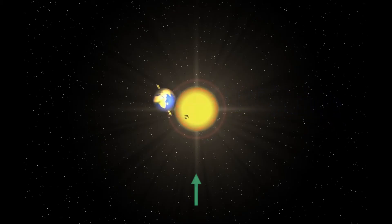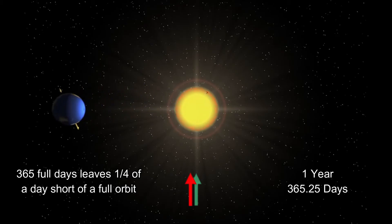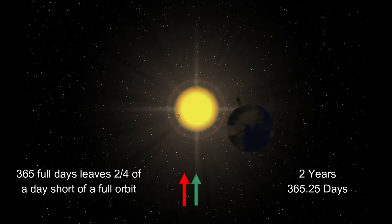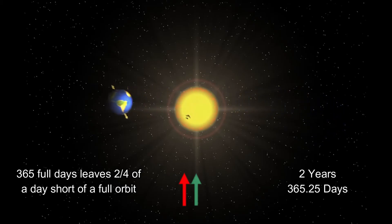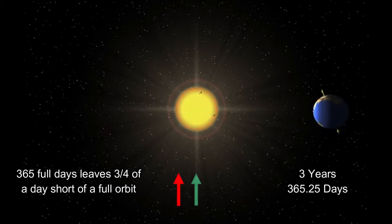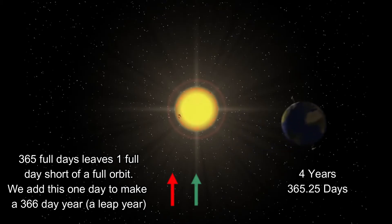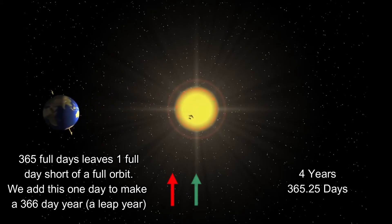After one complete orbit, the Earth has done a year — that's 365.25 days. However, if we only look at full days, it's a quarter of a day short. After two orbits, it's two quarters of a day short. After three years, three quarters of a day short. And after four years, it's one full day, which we add on to our 365 to make 366 days — and this is our leap year.